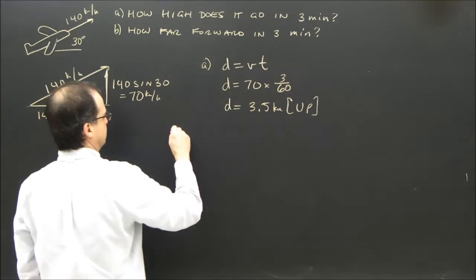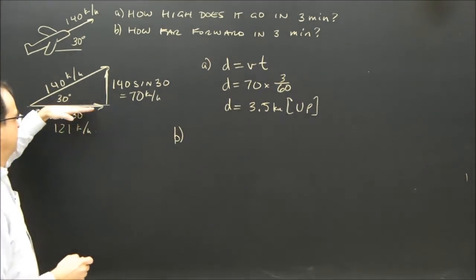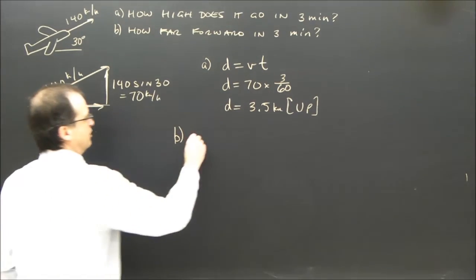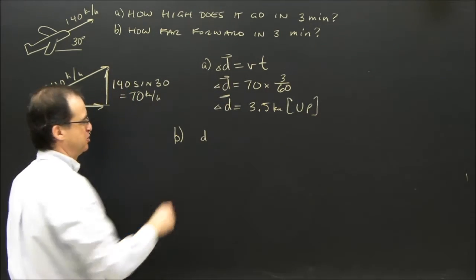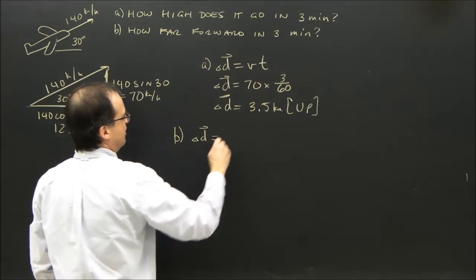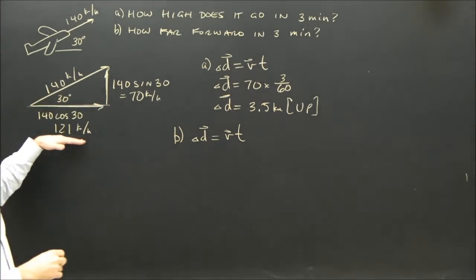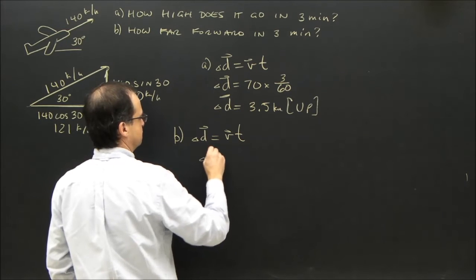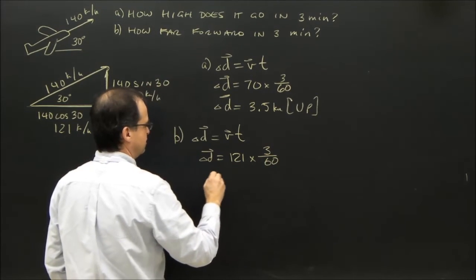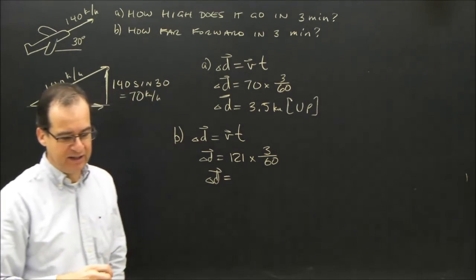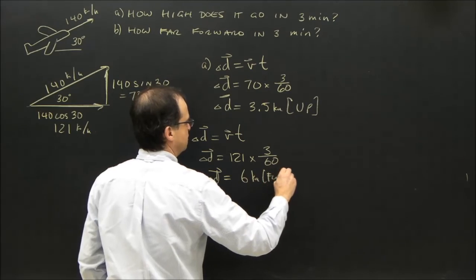How far forward did it move? Same sort of logic — how far forward matches with the horizontal component. The displacement equals velocity times time. The velocity is 121 kilometers per hour, and the time is the same three minutes, turned into hours: 3 divided by 60. So the displacement forward is 6 kilometers forward.